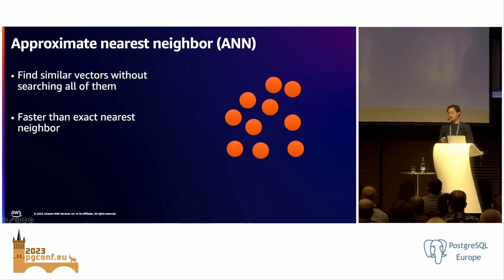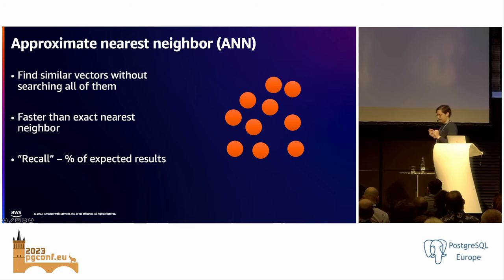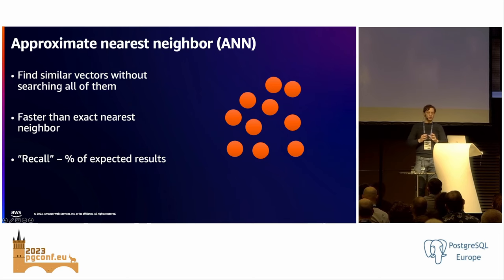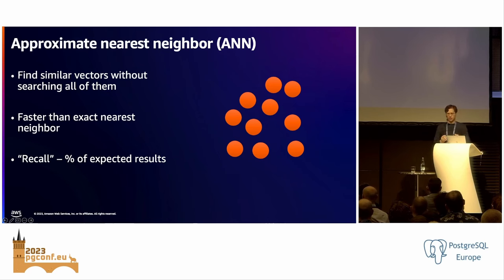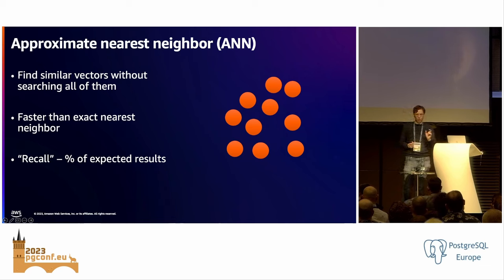The technique called approximate nearest neighbor allows you to find results without having to search over everything. When we're dealing with indexes and looking over a smaller set of data, we're able to do lookups very quickly — like a unique index with a B-tree. This will ultimately be faster than an exact nearest neighbor search, particularly as your dataset grows. But this gets into a concept that's weird for database folks: we introduce something called recall. In the machine learning context, recall is the percentage of your expected results. When I write a query like 'select, order by, find me my 10 nearest neighbors,' I expect to see my 10 nearest neighbors.